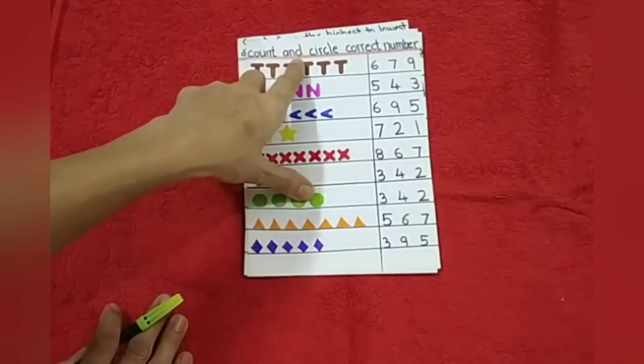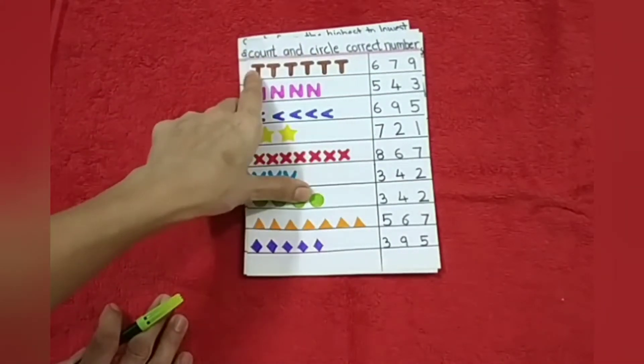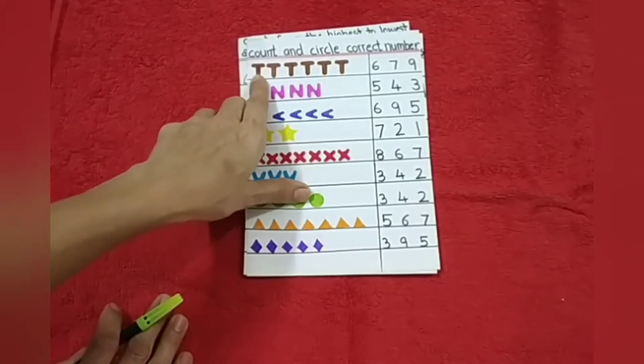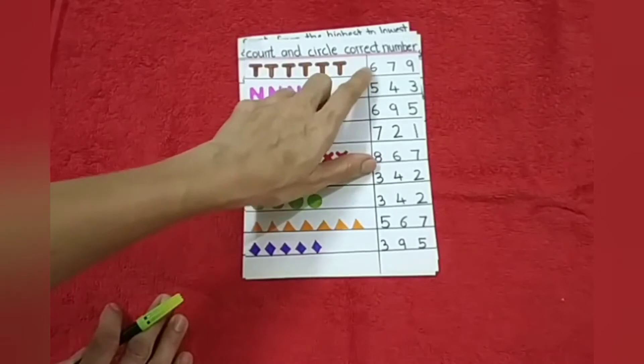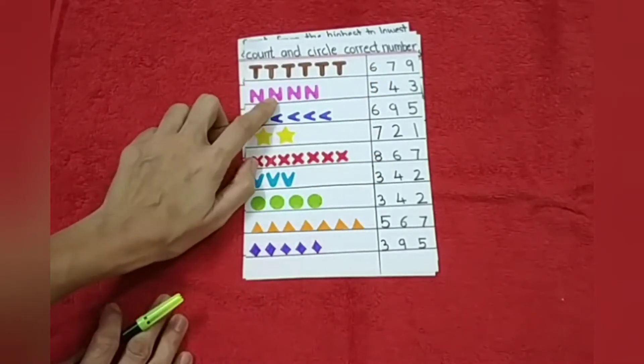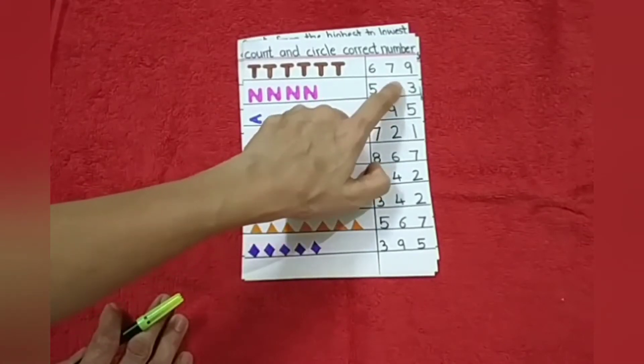After that, count and circle correct number. So they have to count the object. 1, 2, 3, 4, 5, 6. Six objects are there. Again, they have to identify the number and they have to circle it. 1, 2, 3, 4. This is the number 4, and they can circle it and so on.